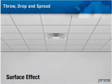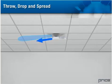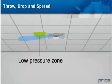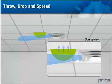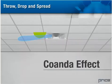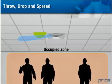When the primary air is discharged from the air outlet at high velocities, it creates a negative or low-pressure zone between the air jet and the ceiling. This low-pressure area causes the moving air mass to cling to and flow close to the ceiling surface, and is called the Coanda effect, or surface effect. This effect has a strong influence on the throw and drop distances of the diffuser.